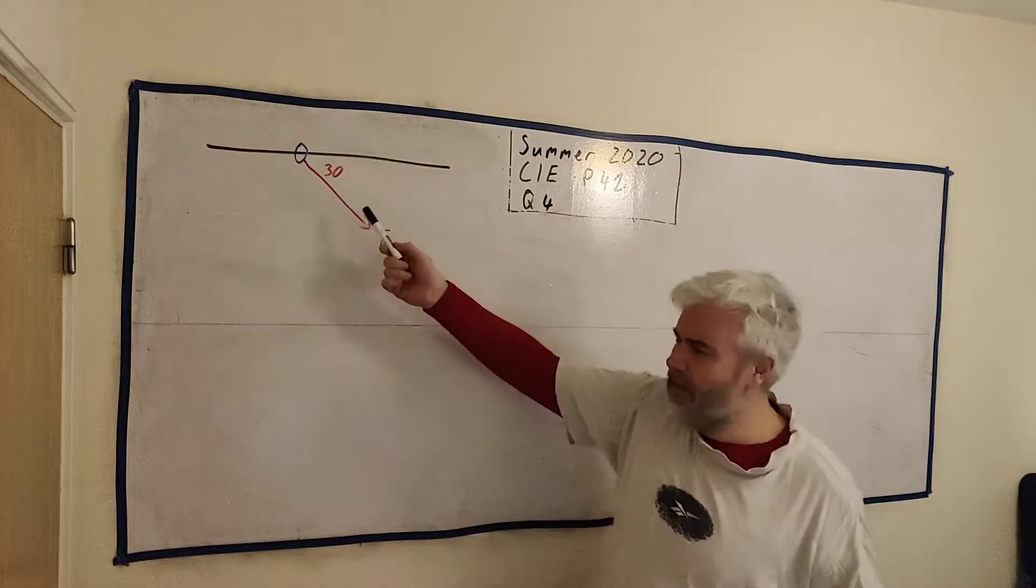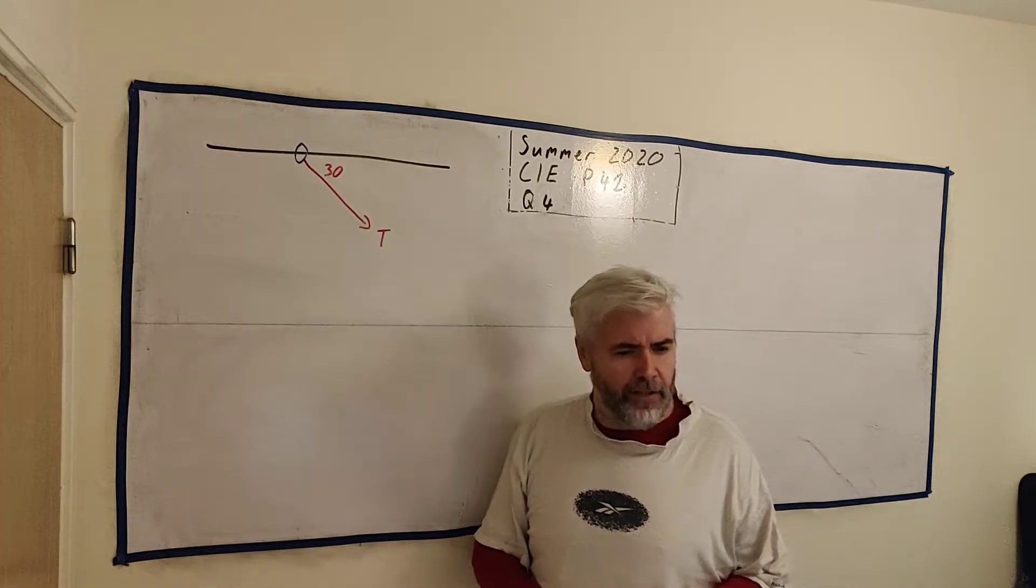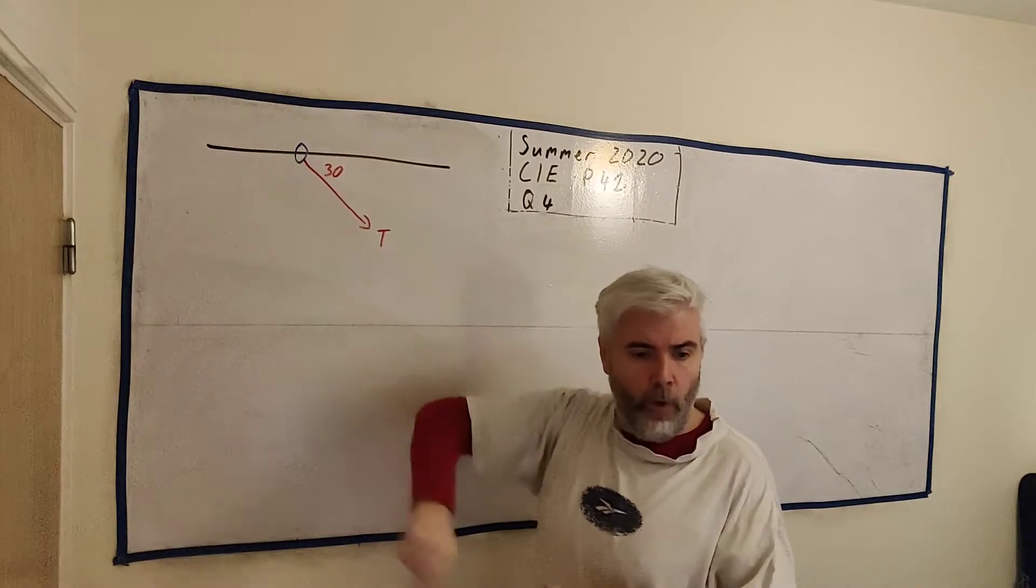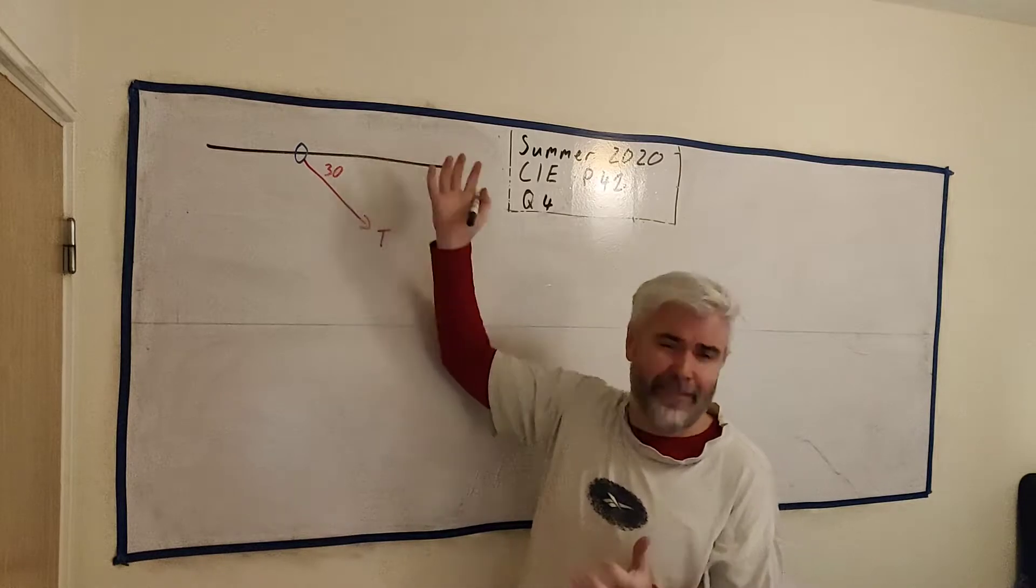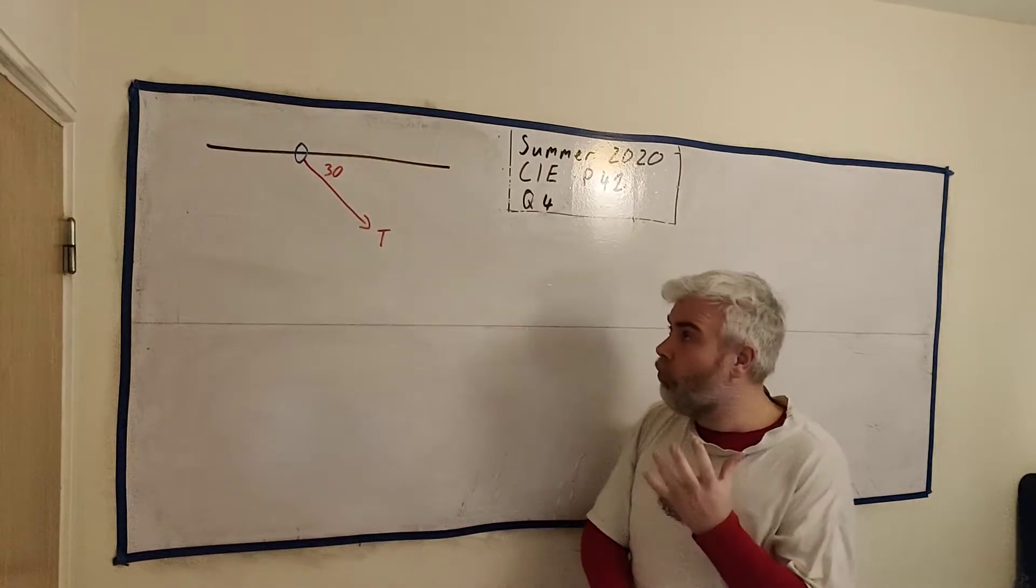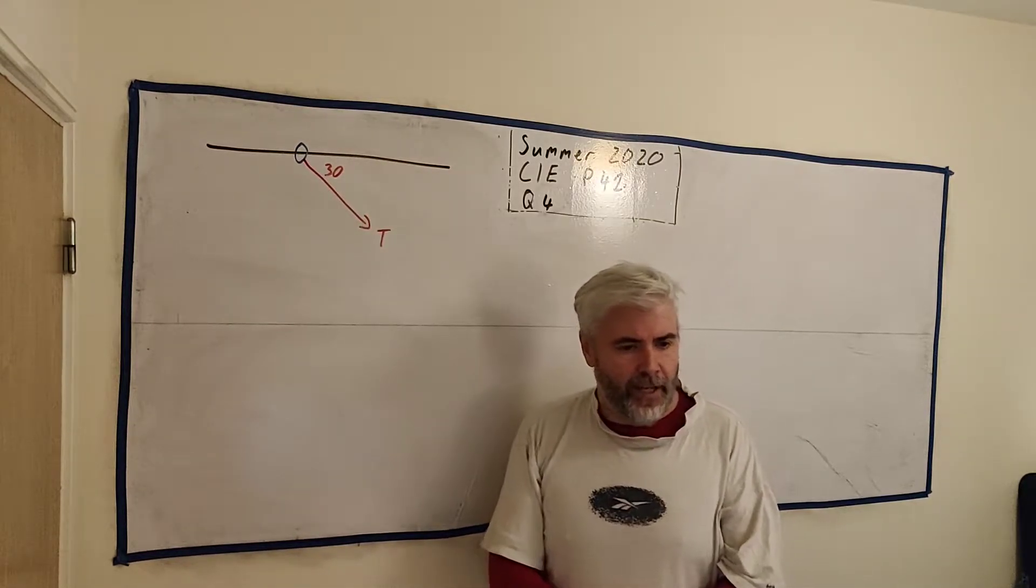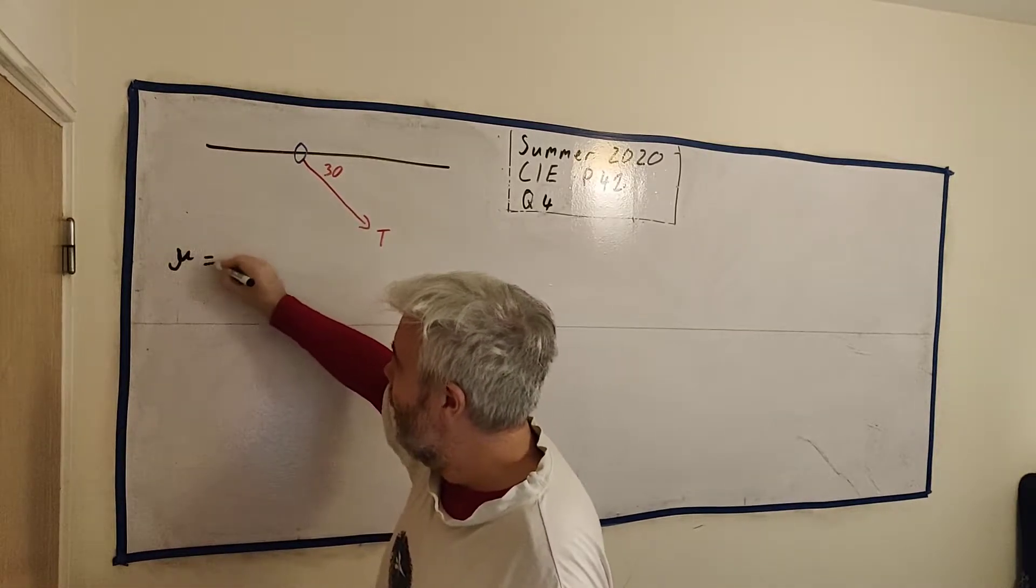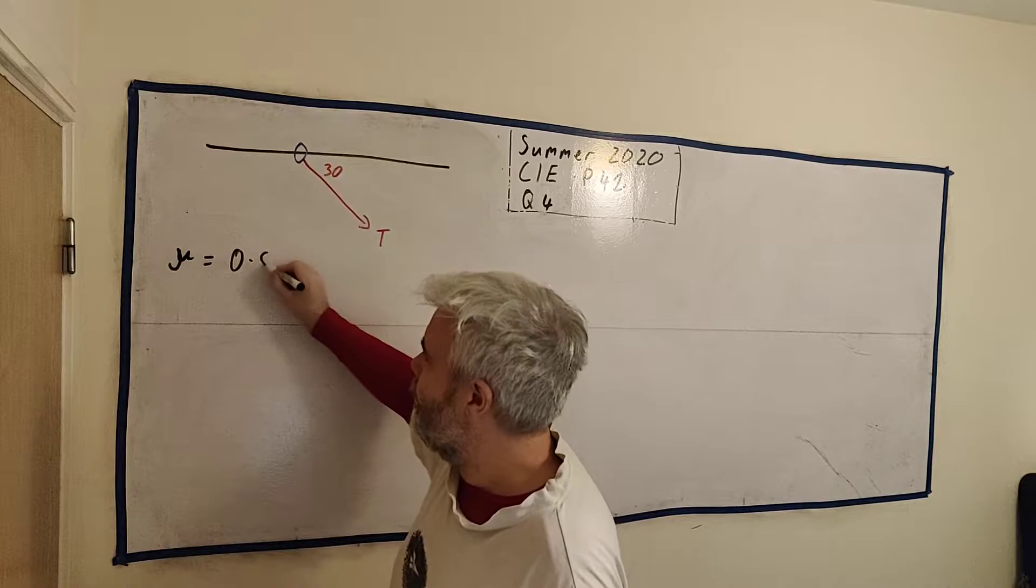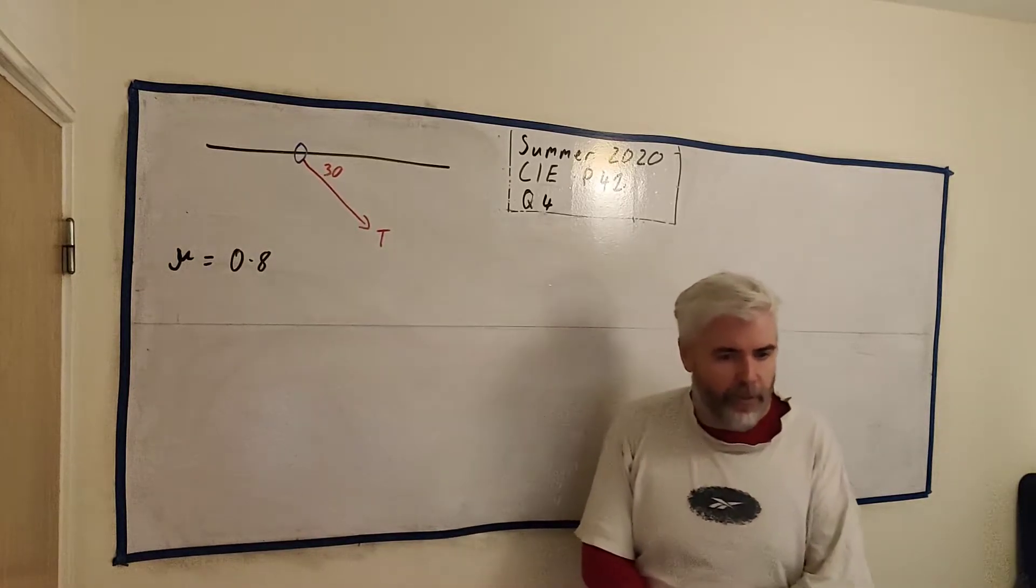This question provides us this image and it also tells us that this ring here has mass 0.1 kilograms. It tells us the rod is fixed, it's not going to move, but it's also rough so there is resistance on it. And it tells us the coefficient of resistance for this rod and ring is going to be 0.8. That's going to be quite important.